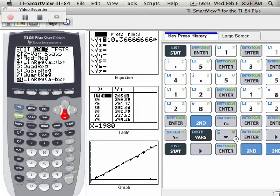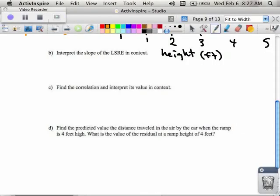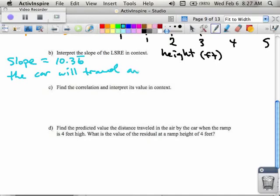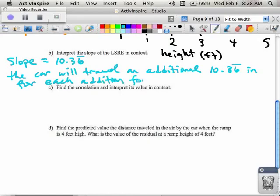The slope from our LSRE or y hat or prediction line was equal to positive 10.36 repeating. What does this mean? This means the car will travel an additional 10.36 repeating inches for each additional foot the ramp height increases.